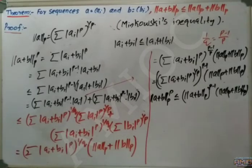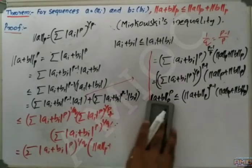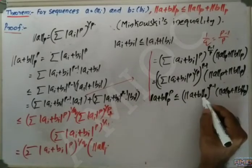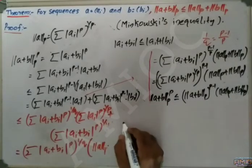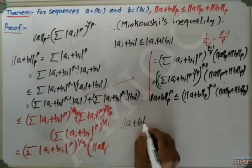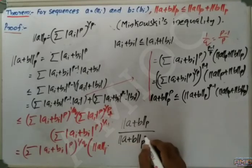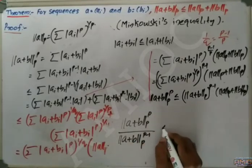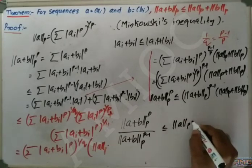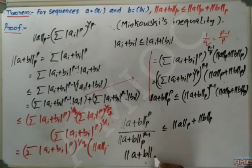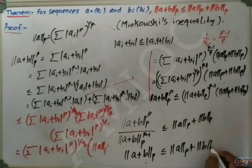This can be rewritten by dividing both sides by ‖a+b‖_p^(p−1). We get ‖a+b‖_p^p / ‖a+b‖_p^(p−1) ≤ ‖a‖_p + ‖b‖_p. This simplifies to ‖a+b‖_p ≤ ‖a‖_p + ‖b‖_p.